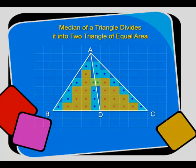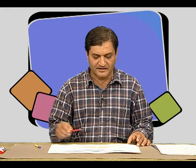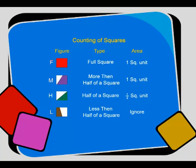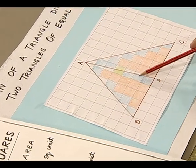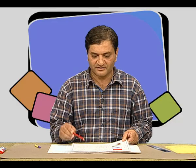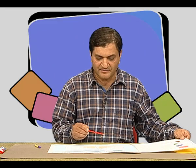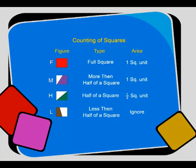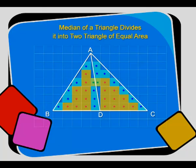The replica of the triangle we have just made is ready with us. We observe that some squares inside these triangles are fully filled; the area of these squares is taken as one square unit. Some squares are more than half filled — each counted as one square unit. Some squares are exactly half filled — each counted as half a square unit. The remaining squares are less than half filled, which we ignore.